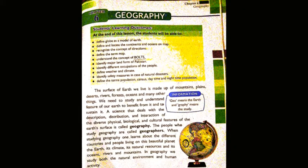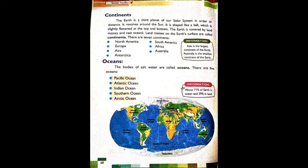In geography you study both things - the natural environment, meaning the natural surroundings, and what human activities are taking place in different locations. Now moving on, continents - the entire world has a total number of continents. The earth is the third planet of our solar system in order of distance.